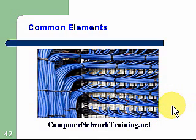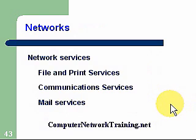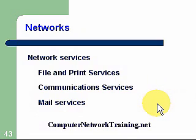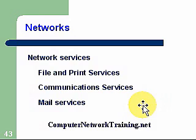Network services — these are some of the services available when we set up our network. We can have file and print services, where we share a single printer among many computers, allowing us to get a heavier-duty printer that can service maybe up to 100 people or more. Communication services allow computers to connect to off-site locations — users can log in and access the network and we can also remotely connect to them if needed. Mail services provide email capability locally so people can create and store their email.